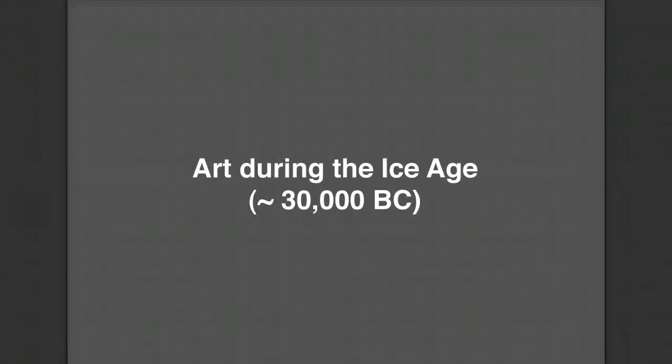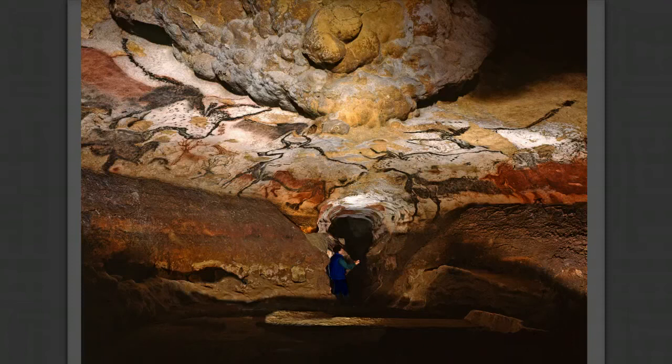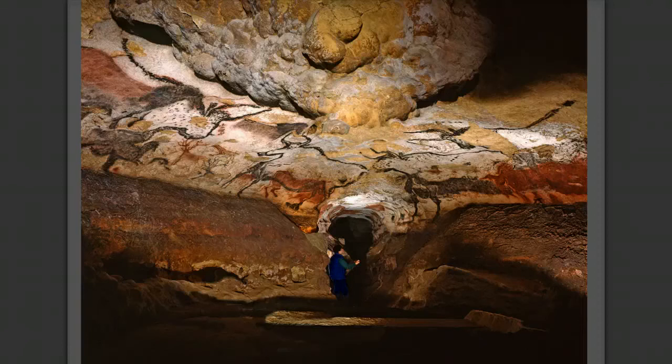As we discussed in week 1, the ability to make images, the ability to read images, and the need and impulse to create images is something that's uniquely human. Our earliest evidence of such a process comes from prehistoric cave paintings. Cave paintings like the caves of Chauvet and Lascaux are some of the earliest examples of humans' desire to leave a mark on an object and tell a story through image-based communication. What we see in cave paintings like Lascaux may not necessarily be what we define as art with a capital A, but it is definitely where art begins.